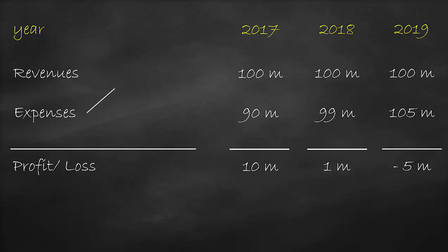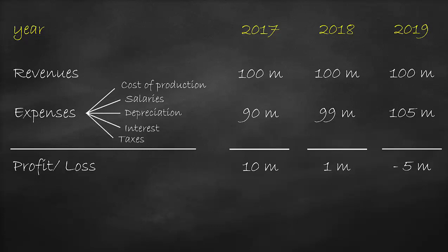Such as cost of raw materials, wages, marketing expenses, or interest expense. Therefore, we need to state expenses into different types of expenses for better analysis, and then we can calculate profits at different levels.